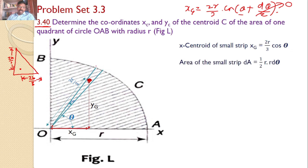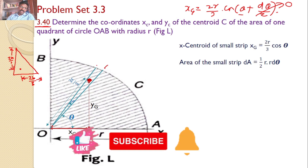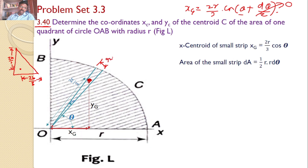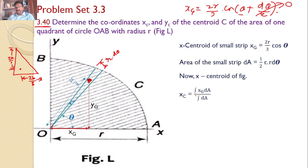Now, the area of this small strip. Clearly we can see it is a small right angle triangle. For the right angle triangle, the area is equal to half base into height. Here the base value is R. We can clearly see it is in the form of a small sector, and for the sector, the arc length is equal to R·d theta. Hence, the area of this strip is equal to half, base is R, and height is equal to R·d theta. The x-coordinate for the quarter circle can be calculated using the formula: integral of xg·dA divided by integral of dA.